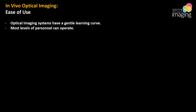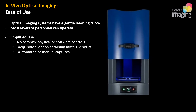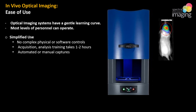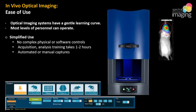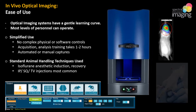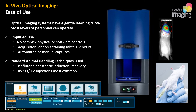Last but not least is the ease of use of the systems themselves. These systems have a gentle learning curve, and nearly all levels of personnel can operate them. While functionality varies slightly from vendor to vendor, our systems typically require only an hour or two of training to get folks up and running on basic acquisition and analysis. Systems and software are intuitive, offering easy click acquisitions for new users or more manual control for seasoned veterans. Animal care and handling techniques are routine — from anesthetic induction to recovery, to IP, sub-Q, or tail vein injections of dyes, substrates, and cells. Even entry-level technicians can be rapidly brought up to speed.